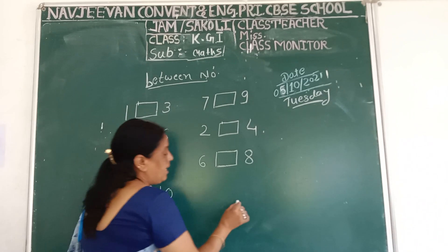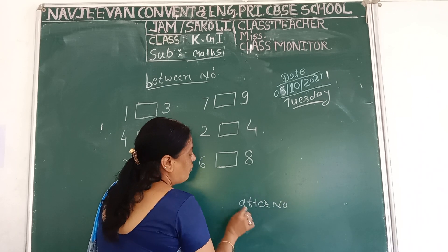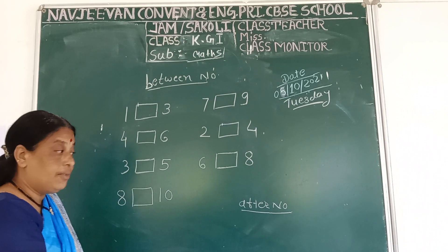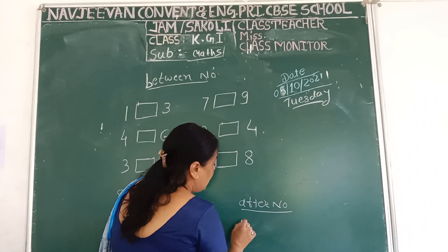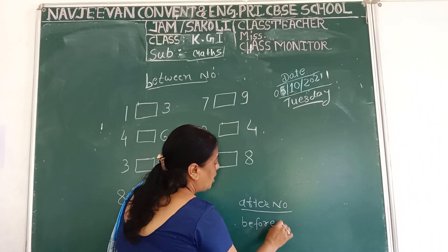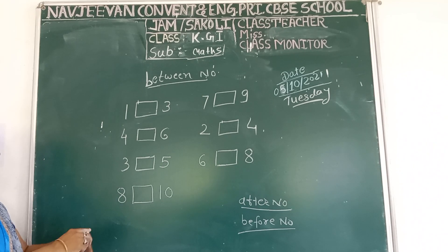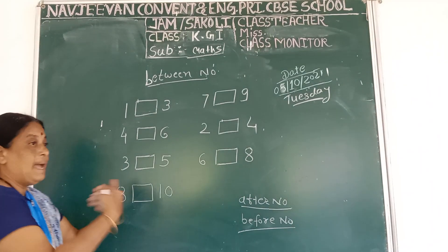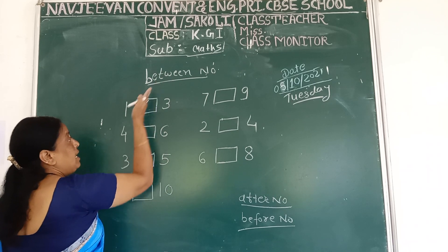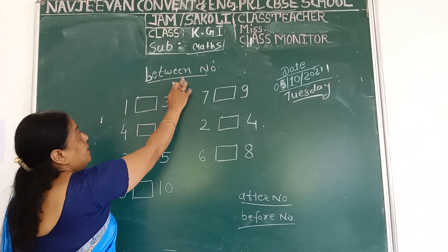How many of you have studied after number? After number means the number that comes after. Bardo waala number, pahele waala number. Now we are going to learn about between number. Between number.